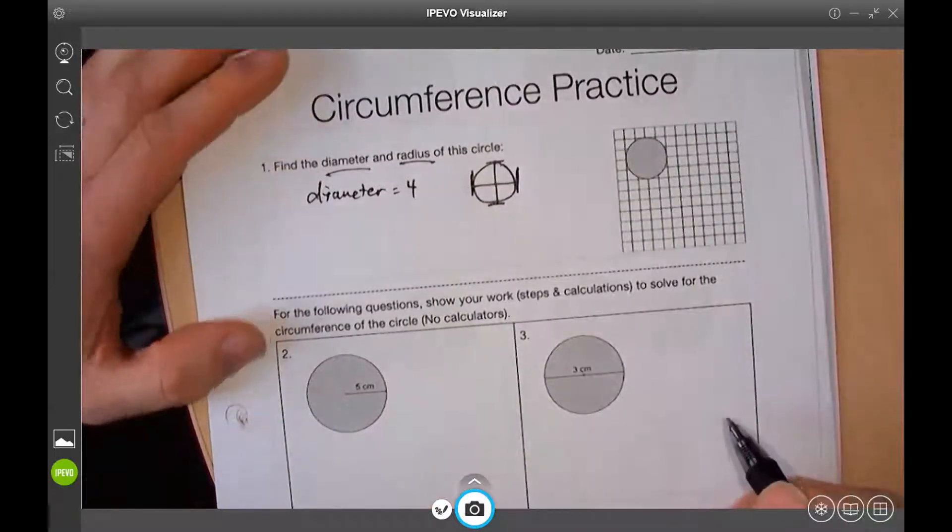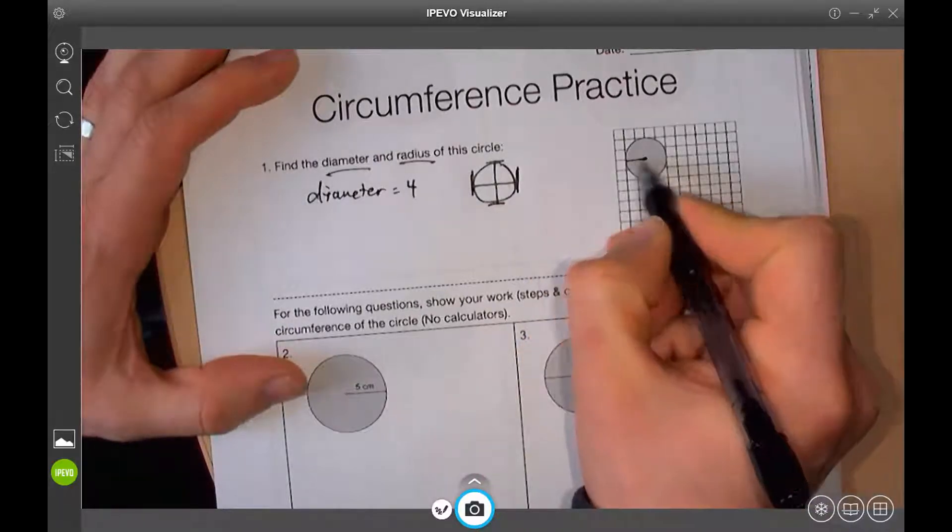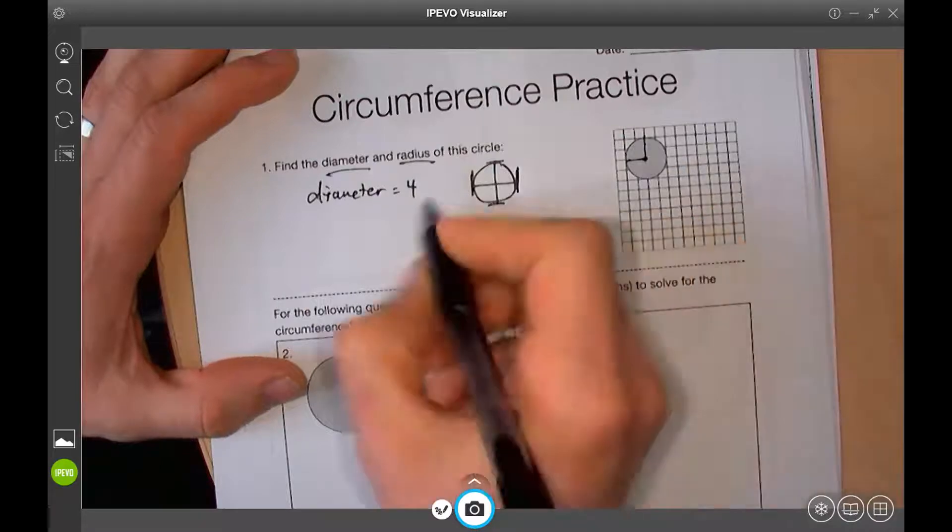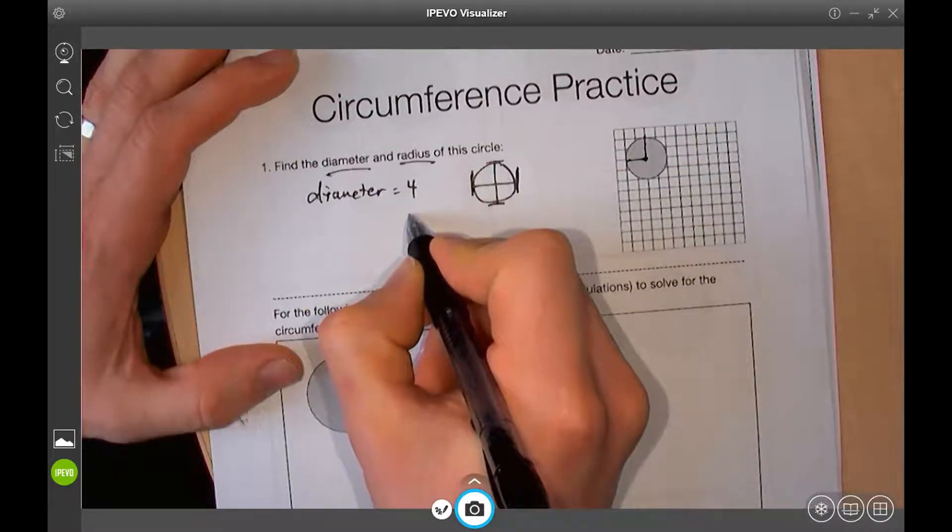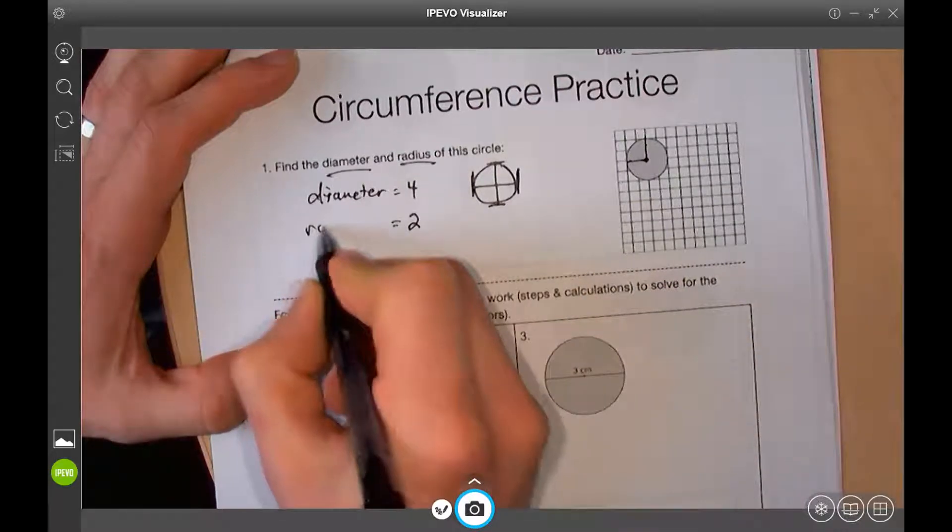Oops, I gave you the answer. That's okay. The radius would be half that amount. So, from the middle to the edge, this is a radius. So, 4 divided by 2, or half of 4 is 2. So, the radius would be 2.